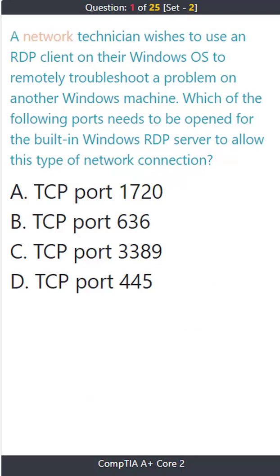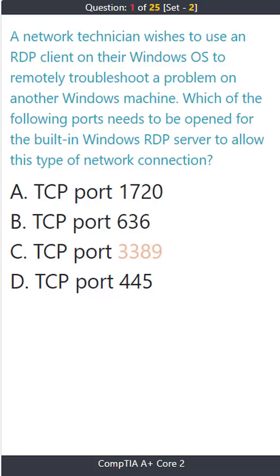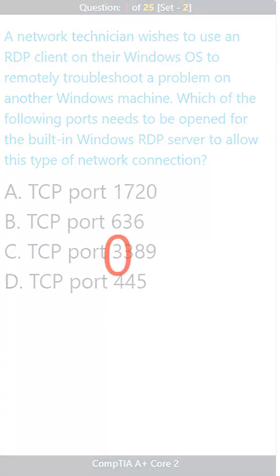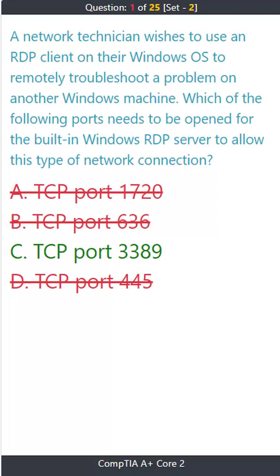Question 1. A network technician wishes to use an RDP client on their Windows OS to remotely troubleshoot a problem on another Windows machine. Which of the following ports needs to be opened for the built-in Windows RDP server to allow this type of network connection? A) TCP port 1720, B) TCP port 636, C) TCP port 3389, D) TCP port 445. The correct answer is C) TCP port 3389.